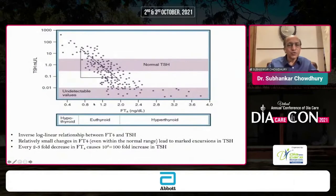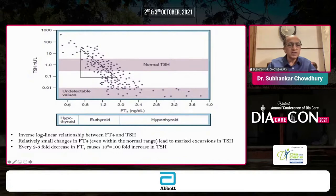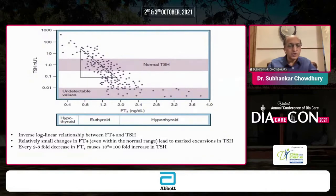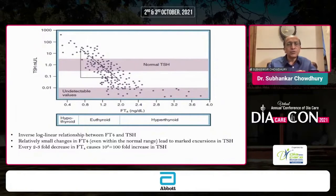This shows the relationship between free T4 on the horizontal axis and TSH on the vertical axis. There is an inverse log-linear relationship between the two. What it means is: even a small change in free T4 values will be associated with marked changes in TSH. So if you have clearly low free T4, you normally expect in primary hypothyroidism to have TSH clearly high — 50 or 100 for a T4 of that level. That's typical.